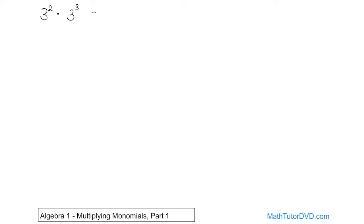Well, if you think about it, what this first term is — the 3 squared — I just mentioned it to you, it's 3 times 3. So we're just going to write everything down explicitly. This is 3 squared, and we're now multiplying it by 3 times 3 times 3. That's what the second thing is, and this is 3 cubed. So when we write something like 3 squared times 3 cubed, this is what's really happening — it's really 3 times 3 times 3 times 3 times 3.